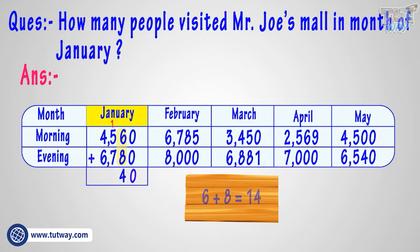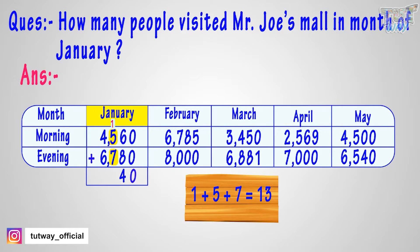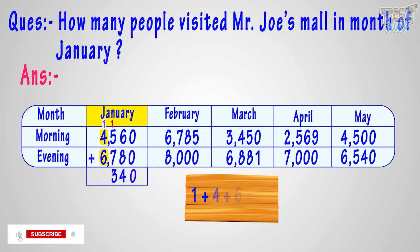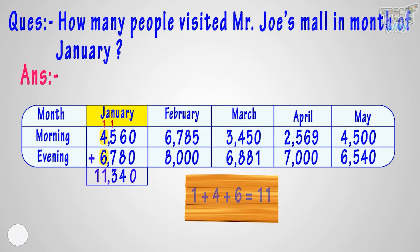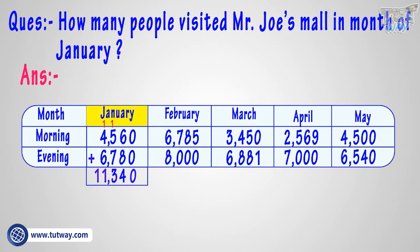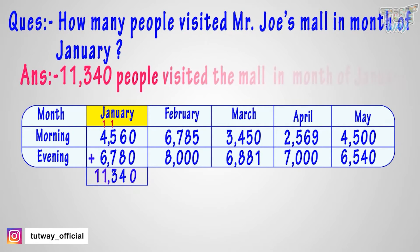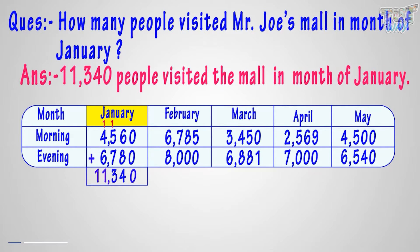Adding one plus five plus seven we get thirteen. One plus four plus six we get eleven. Now we don't have to carry over any digit, so write eleven in the sum. We get eleven thousand three hundred and forty. So the answer to the question is eleven thousand three hundred and forty people visited the mall in the month of January.